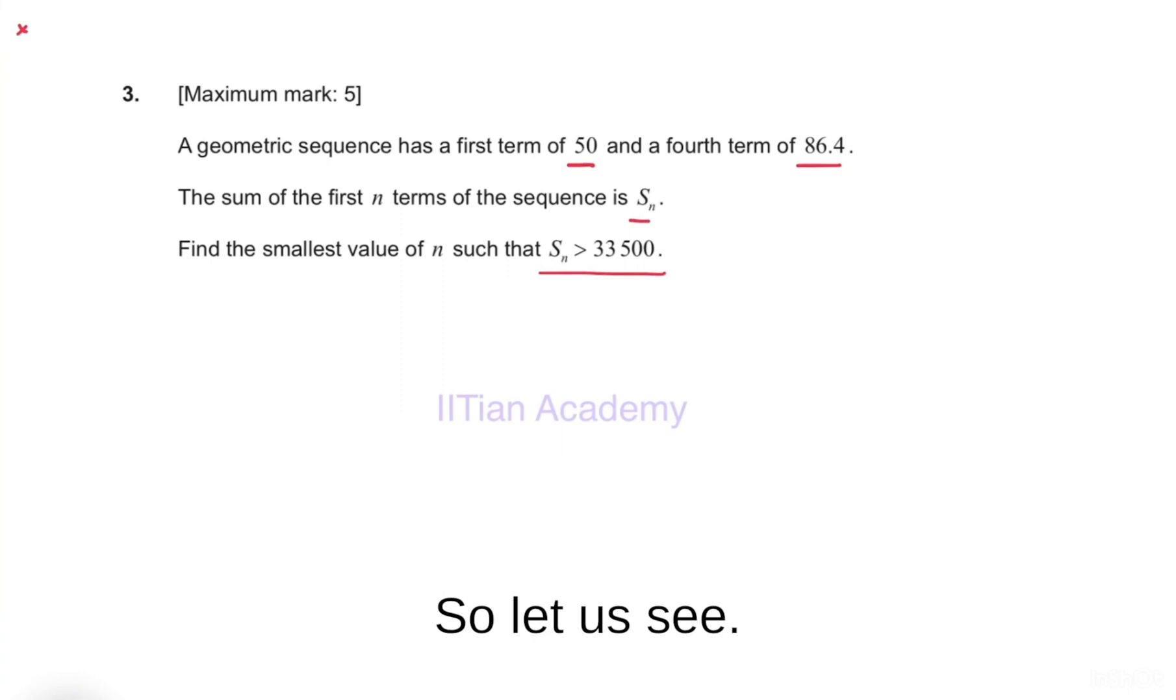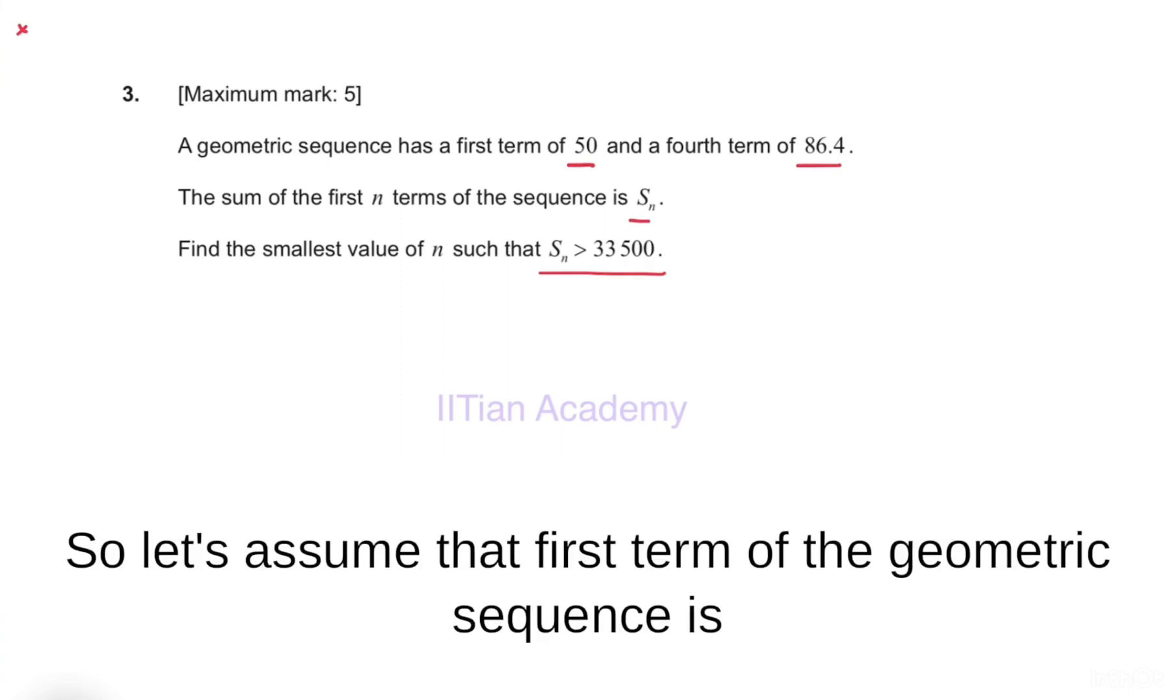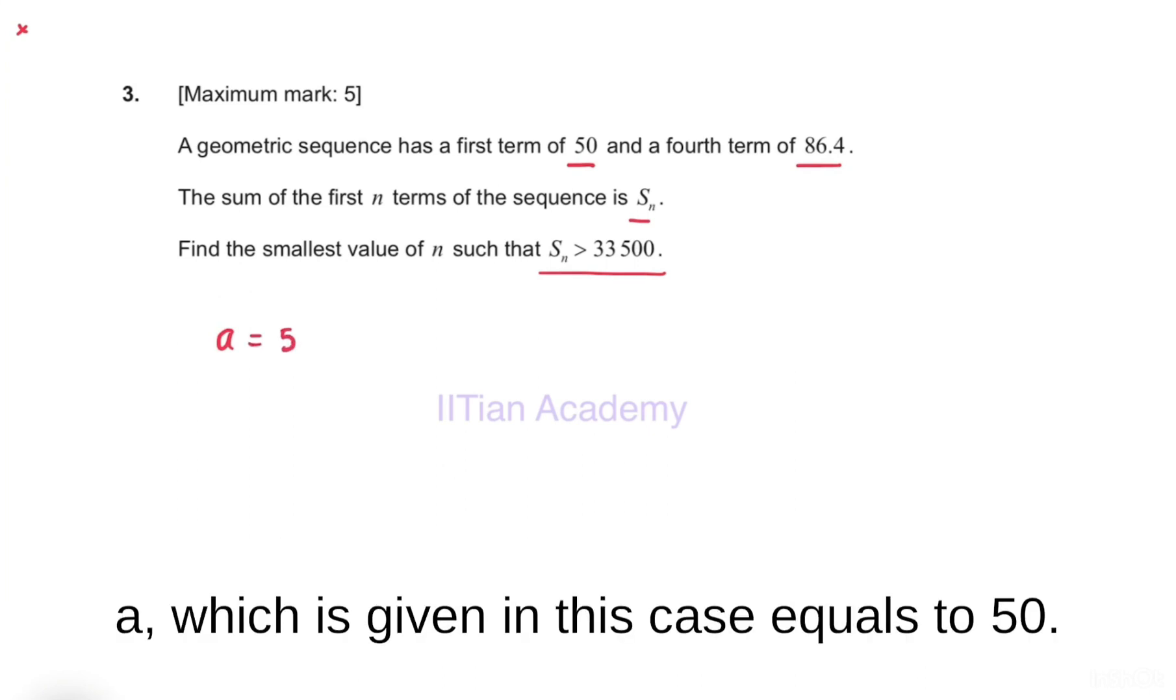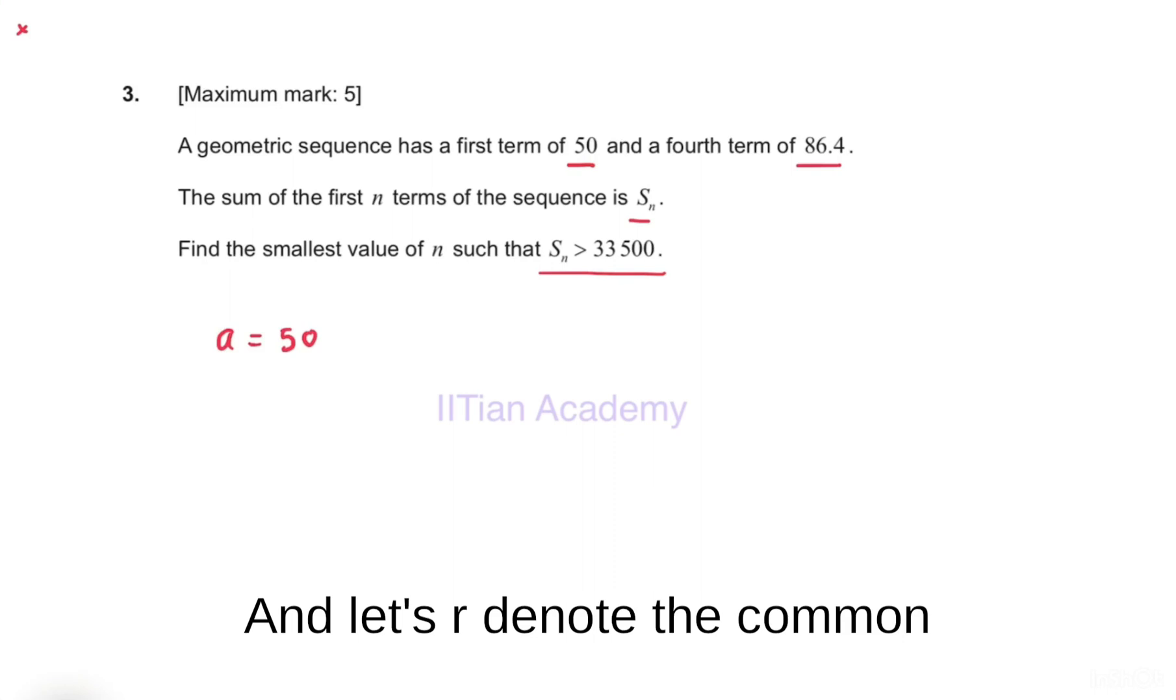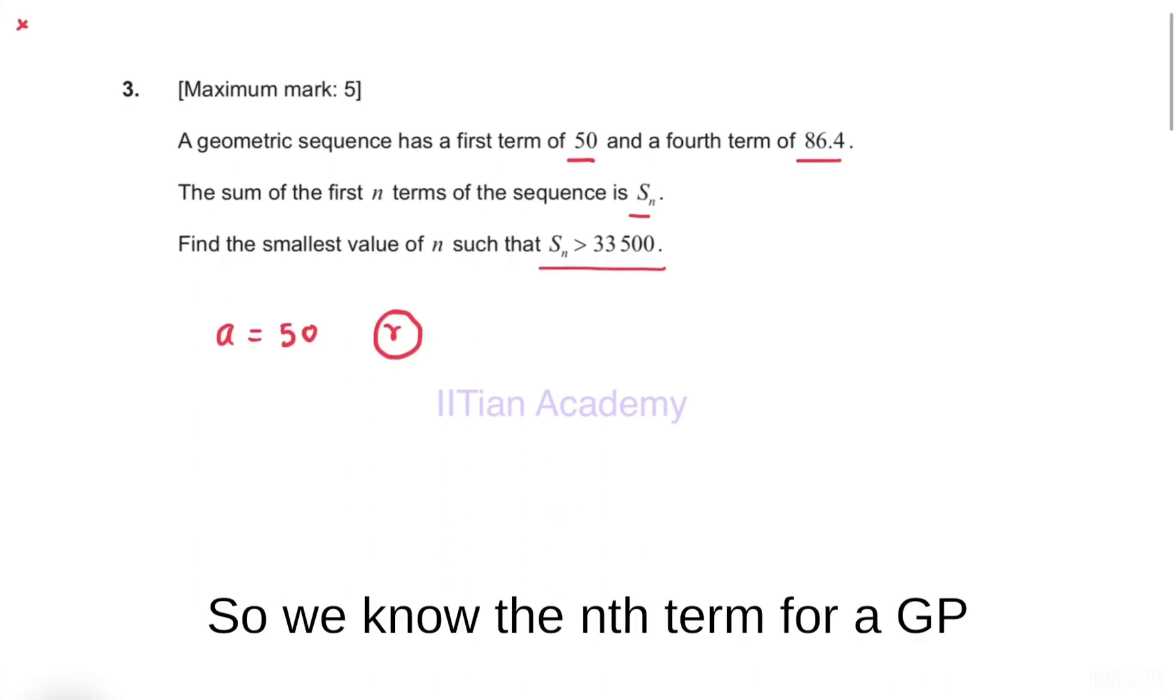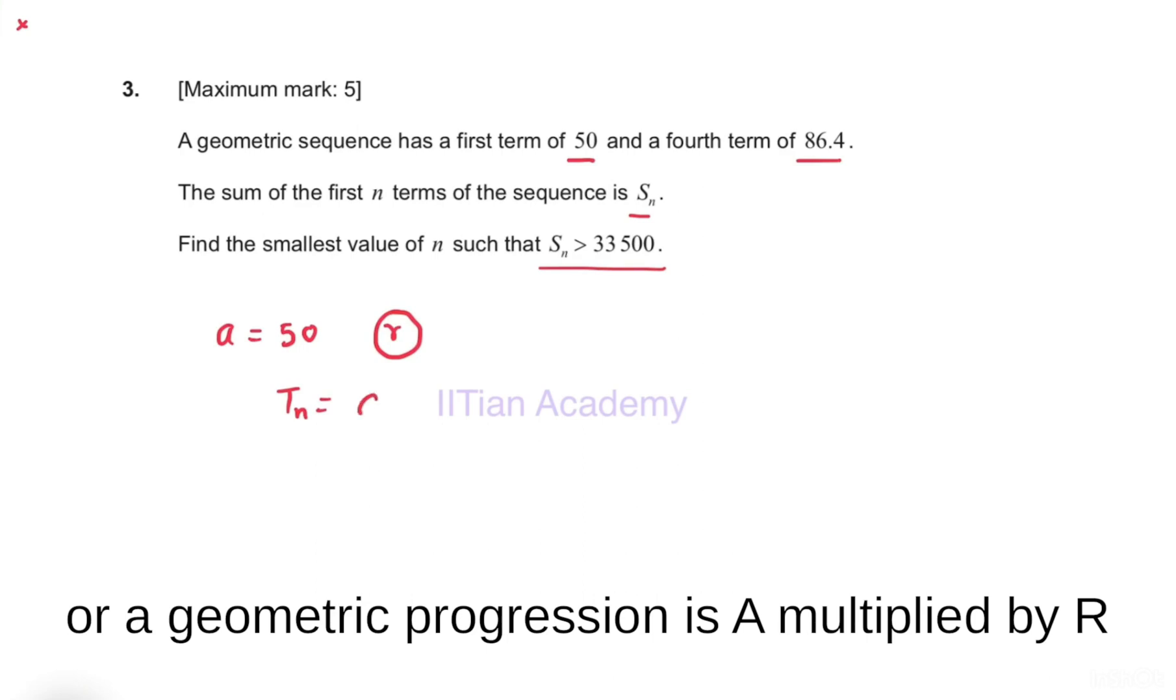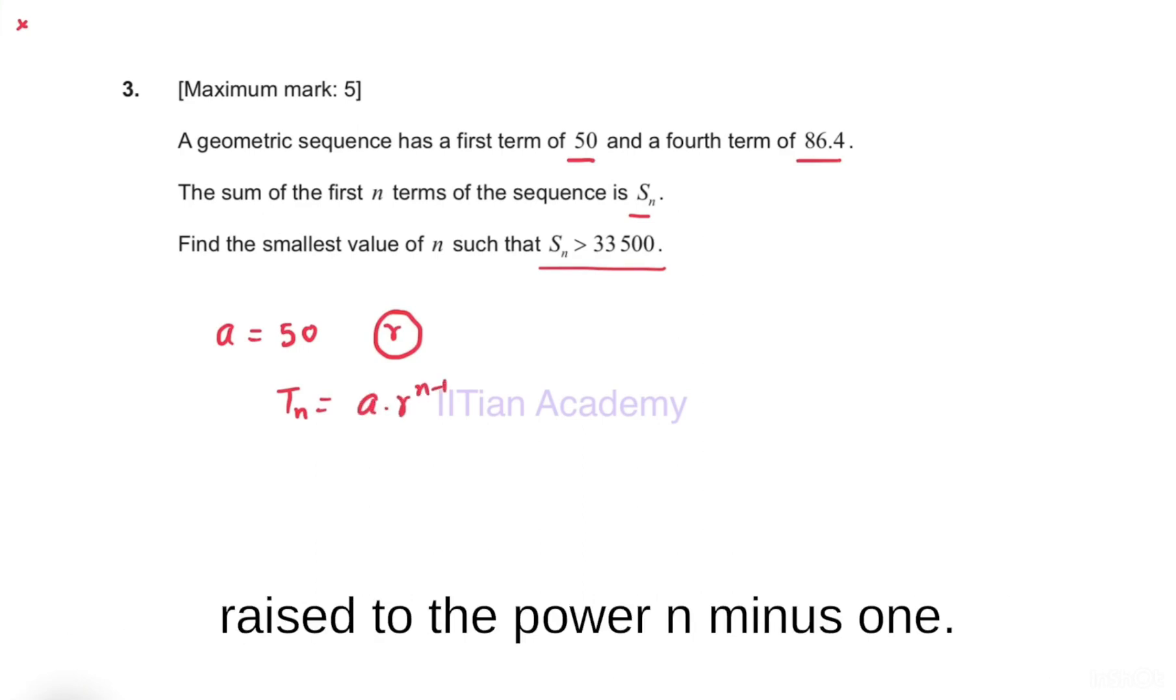Let us assume that the first term of the geometric sequence is a, which is given in this case equals to 50. And let R denote the common ratio for this geometric progression. We know the nth term for a GP or geometric progression is a multiplied by r raised to the power n minus 1.